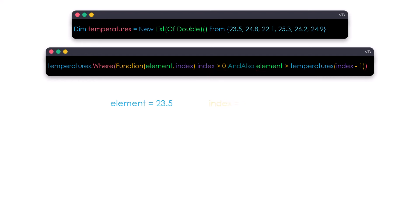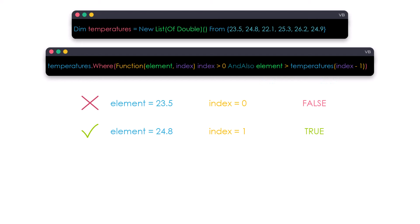Let's check the elements one by one. The first element has index zero, so the condition is false because the index is not greater than zero — we don't get this element as output. The second element has index one, so the first part of the condition is true. The element variable represents the current value, and the previous element is retrieved using index minus one. The current element is greater than the previous one, so we take it as output. Continuing through the sequence, at the end we get three elements that meet the condition of the WHERE method.